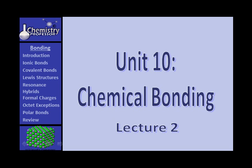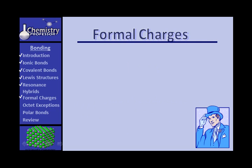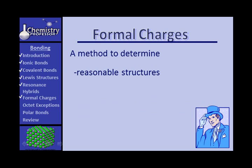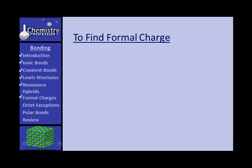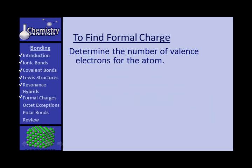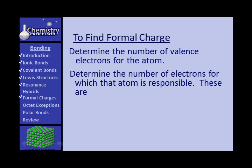Unit 10, Chemical Bonding, Lecture 2: Formal Charges. Formal charge is one way to determine which structures are reasonable, and it's also a way to determine which structures may contribute more or less to the hybrid offspring structure. Here's how you go about finding it. First, you determine the number of valence electrons for an atom. Then you determine the number of electrons that that particular atom is responsible for.